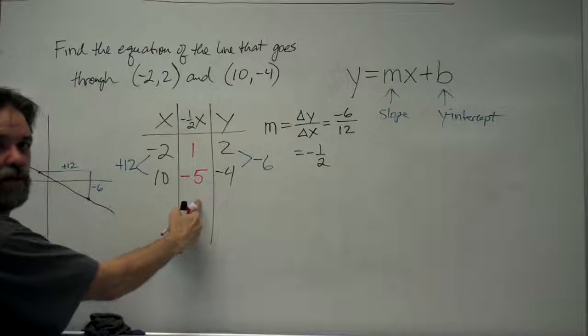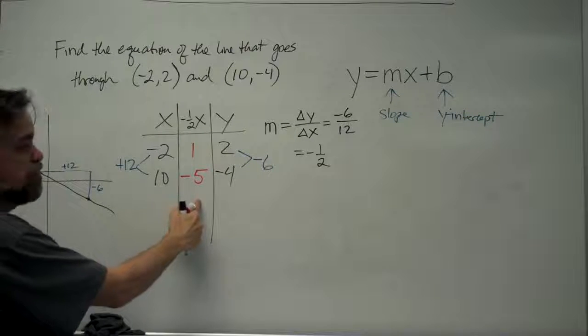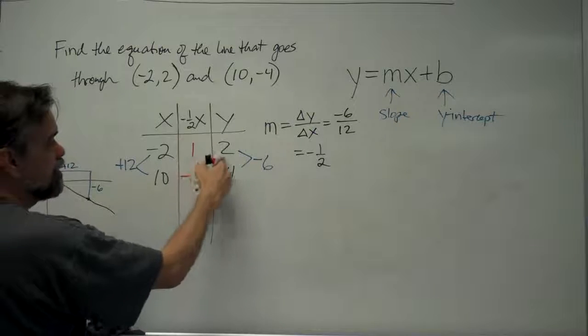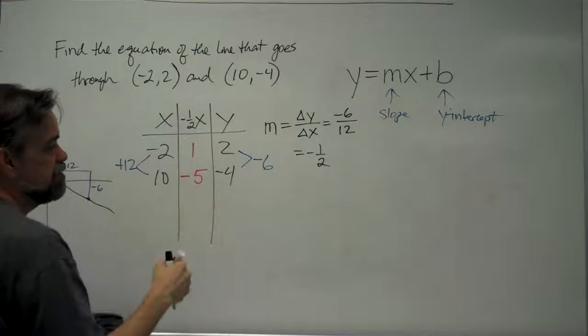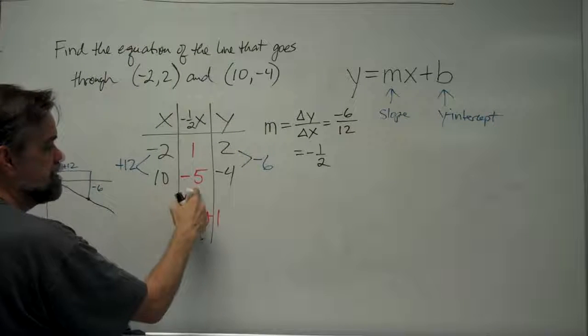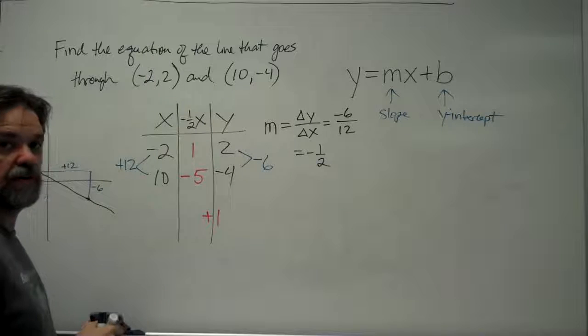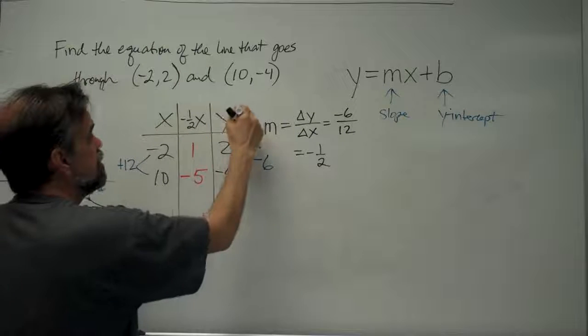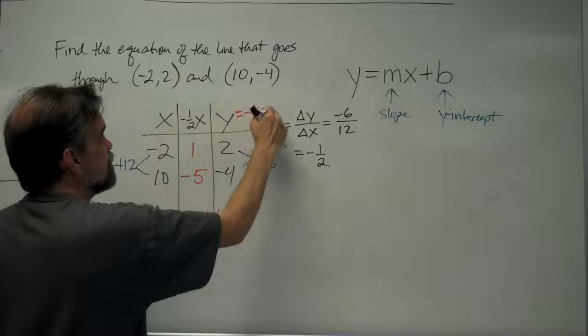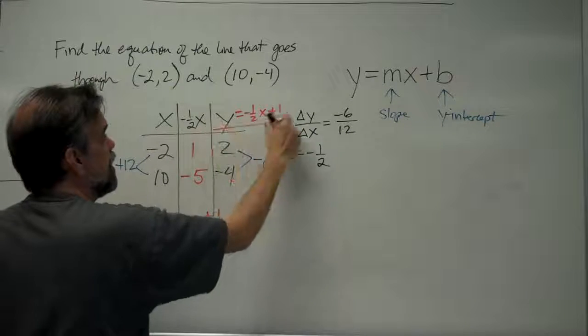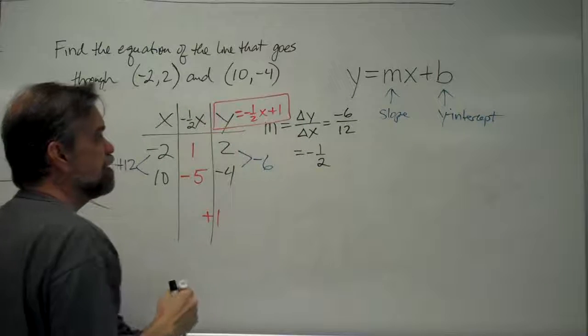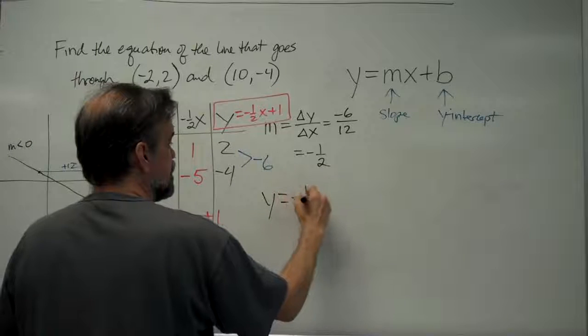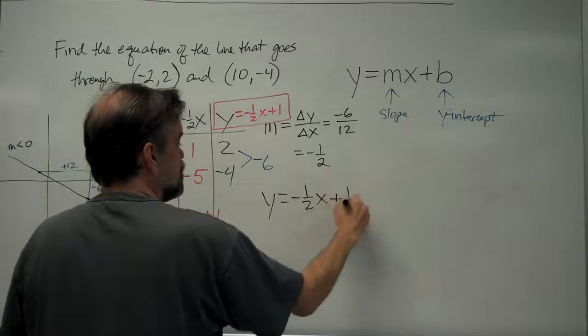And now, look at the middle column. What do we have to add or subtract to this middle column in order to get our right column? 1 plus 1 is 2, and -5 plus 1 is -4. So that means we add plus 1 to this column to get that column. Now, how does that help us? Because that means this thing is this thing plus 1. This is -1/2x + 1, and that is our formula. That is the equation to the line. y = -1/2x + 1.